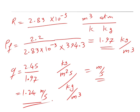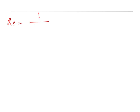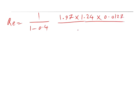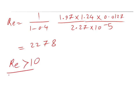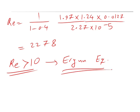Now you have all the parameters to calculate the Reynolds number: Re = (1 / (1 − 0.4)) × (1.97 × 1.24 × 0.0127) / (2.27 × 10⁻⁵) = 2278. Since the Reynolds number is larger than 10, you must use the Ergun equation to calculate the pressure drop.